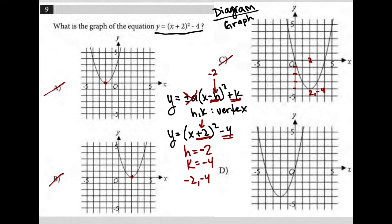For choice D, if this is my origin, then I count negative 1, negative 2 on the x-axis, and negative 1, negative 2, negative 3, negative 4 on the y-axis. So the vertex of that parabola is at negative 2 comma negative 4, which is exactly what I want. That means choice D is the correct answer.